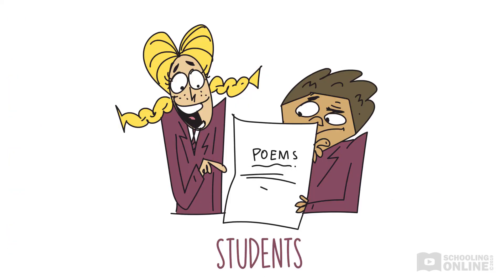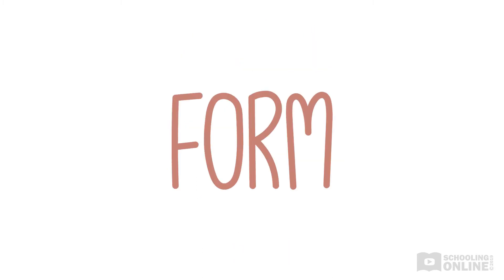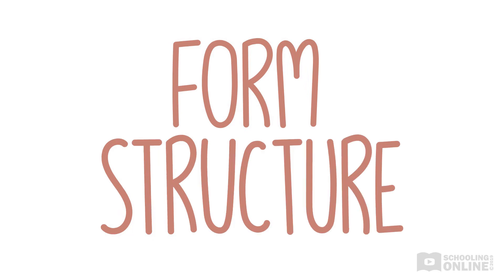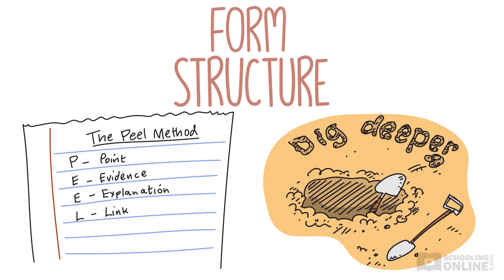Next time you read or write a poem, think about how line breaks create meaning. Nice work! Now you understand how poets use form and structure to get their message across. We've also practised using the PEEL method to talk about form and structure. Remember, PEEL is a great model for using evidence to support your ideas about different poems. Now it's time to dig deeper and look at some more techniques that poets use, so make sure that you watch Lesson 2 of this Perfecting Poetry series.